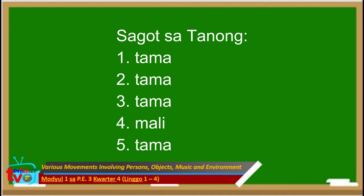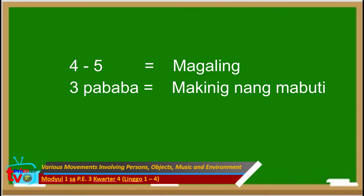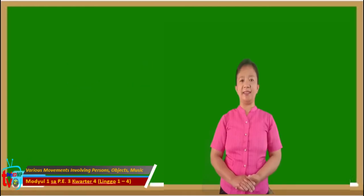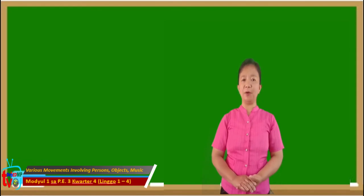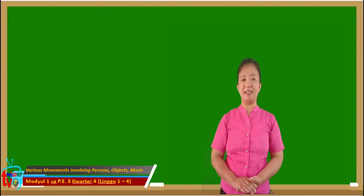Ngayon, iwasto mo ang iyong sagot. Tama ang sagot sa una, ikalawa, ikatlo, at ikalimang bilang. Ang ikaapat lang ang maling sagot. Kung apat o lima ang nakuha mo, magaling at binabati kita. Kung tatlo pababa ang nakuha mo, kailangan makinig ng mabuti. Para sa karagdagang gawain, ipagpatuloy mong gawin kasama ang iyong mga magulang. Gamitin ang rubrik na nasa iyong module. Maraming maraming salamat sa pagsagot. Hanggang sa muli nating pagkikita. Paalam!